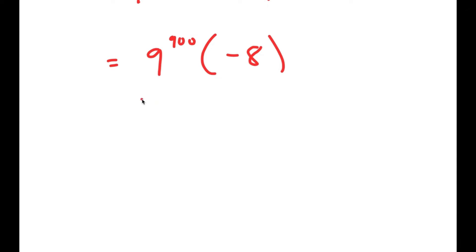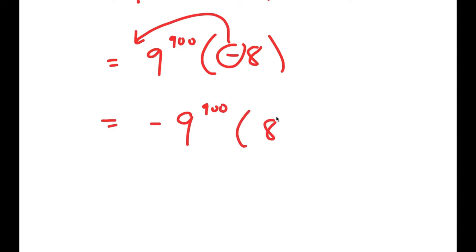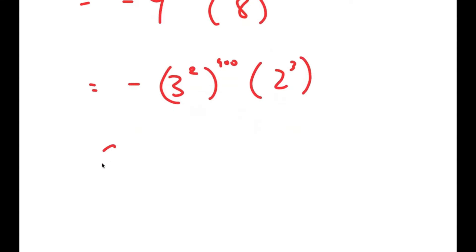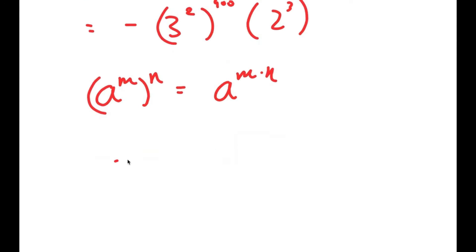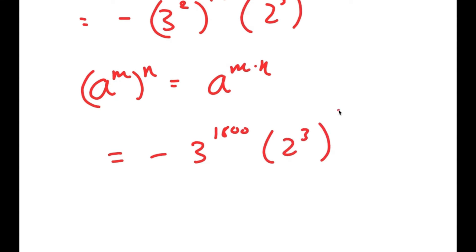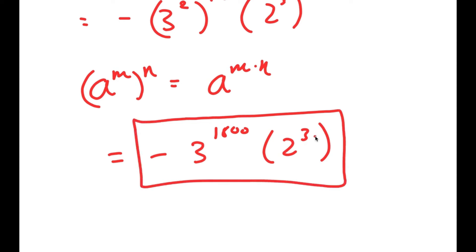We can't get the exact value because 9 to the power of 900 is such a big number, but we can get the simplified form. I'm going to move the negative sign to the front, giving me negative 9 to the power of 900 times 8. Since 9 equals 3 squared and 8 equals 2 cubed, this becomes negative 3 squared to the power of 900 times 2 to the power of 3. Using the property a to the power of m to the power of n equals a to the power of m times n, I get negative 3 to the power of 1800 times 2 to the power of 3 as my final answer.